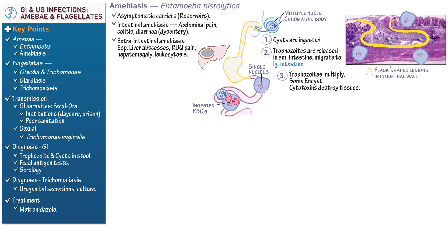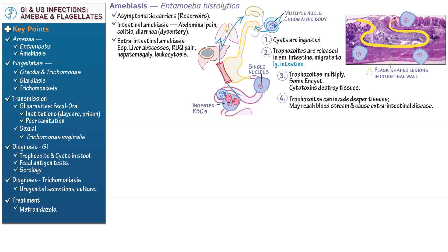Next, show that trophozoites can invade deeper tissues. Once they reach the bloodstream, they can be disseminated and cause extraintestinal disease. As mentioned, the liver is most commonly affected; indicate that other important targets include the lungs and brain. Then, indicate that trophozoites and cysts are excreted in the feces. Recall that trophozoites cannot survive in the external environment, but cysts, with their protective coverings, are adapted to survive until ingested by the next host.